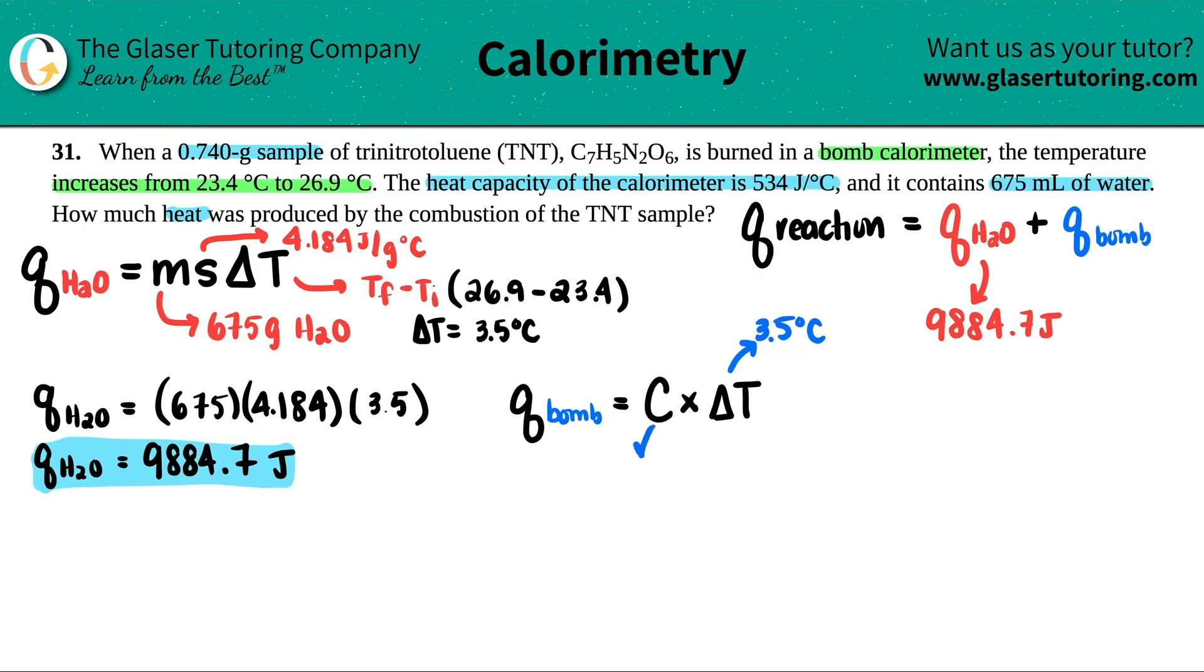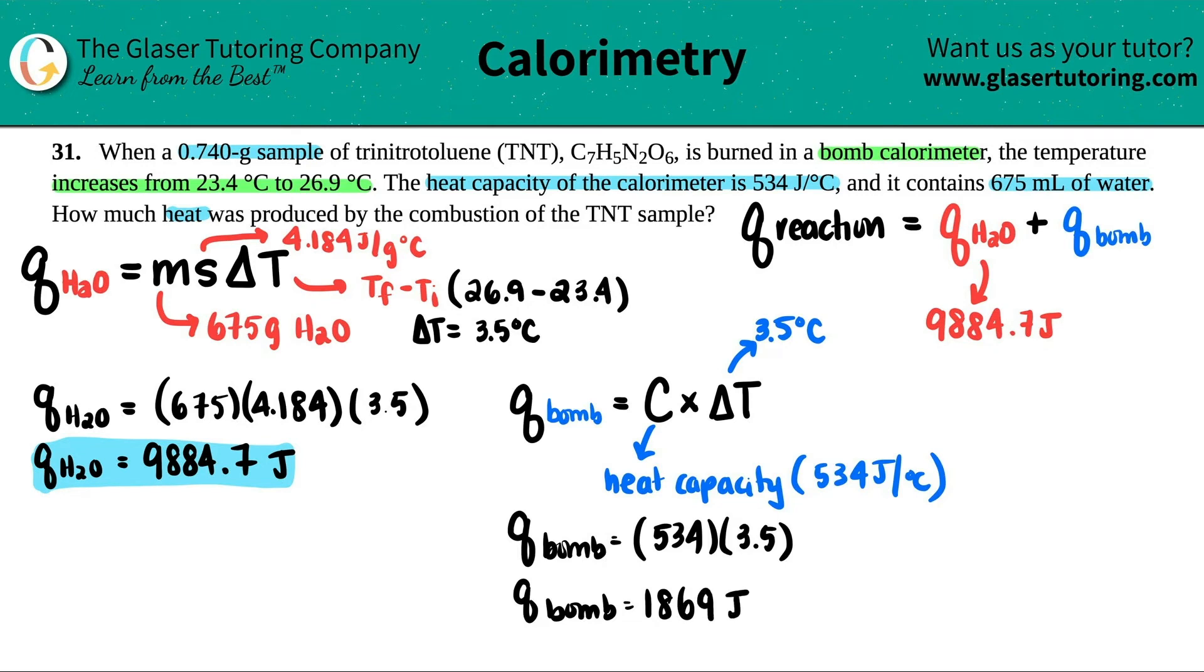And C, remember, is the heat capacity. That's capital C. They told us that the heat capacity of the calorimeter was 534 joules per Celsius. So we know that number. So now all we got to do is just calculate the heat coming just from the bomb calorimeter. So it'd be 534 times 3.5. Let's see. So 534 times 3.5. I got 1869 joules. So that's the heat coming just from the bomb.